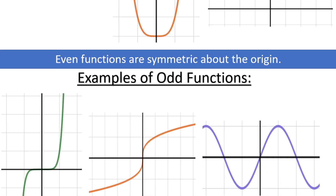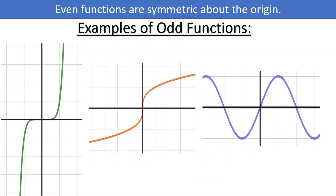Graphically, odd functions are symmetric about the origin, or you can think of them as being flipped across both the x and y-axis. For every positive value for x, there is a corresponding negative value for x with the opposite output. Here you can see a few different graphs which all represent odd functions.